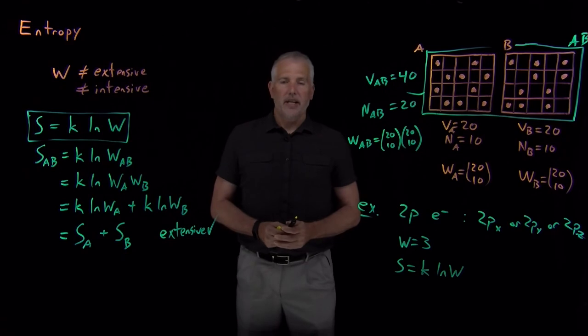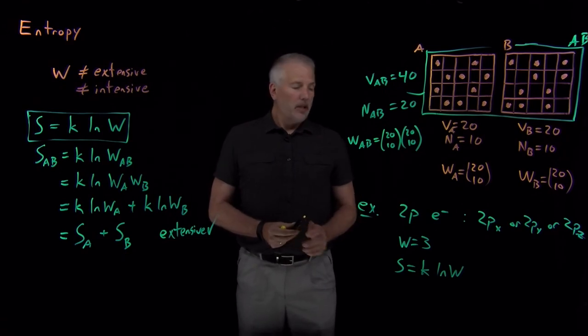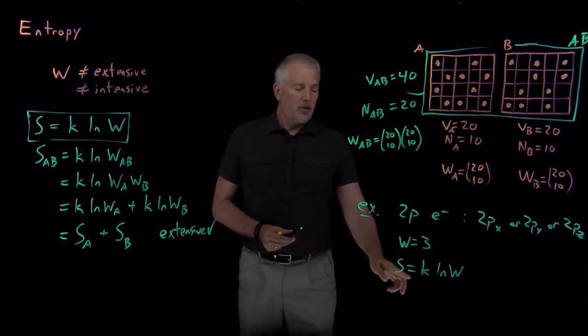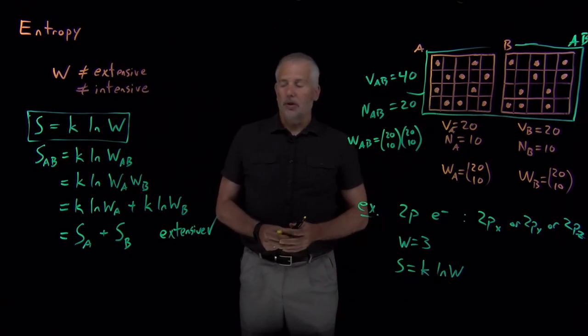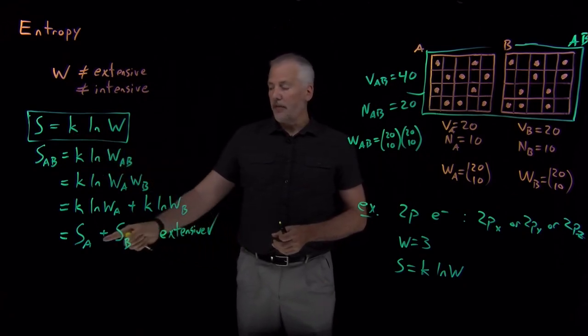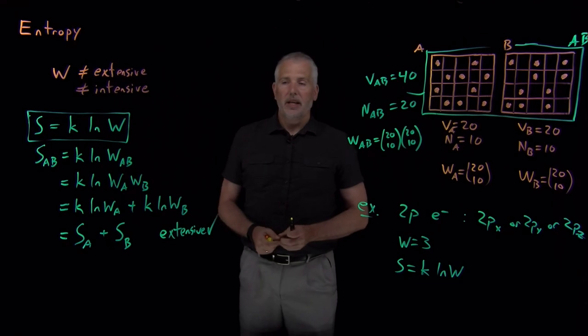If we would like to know what is the entropy of that electron, we just need to calculate k times the log of w. So w we know is 3, we can take the natural log of 3. In order to do something with this expression, we have to talk about the meaning of k. So earlier I mentioned that k is an arbitrary constant. It turns out that if all we're interested in is making entropy become an extensive property, then k could be any arbitrary constant we want.